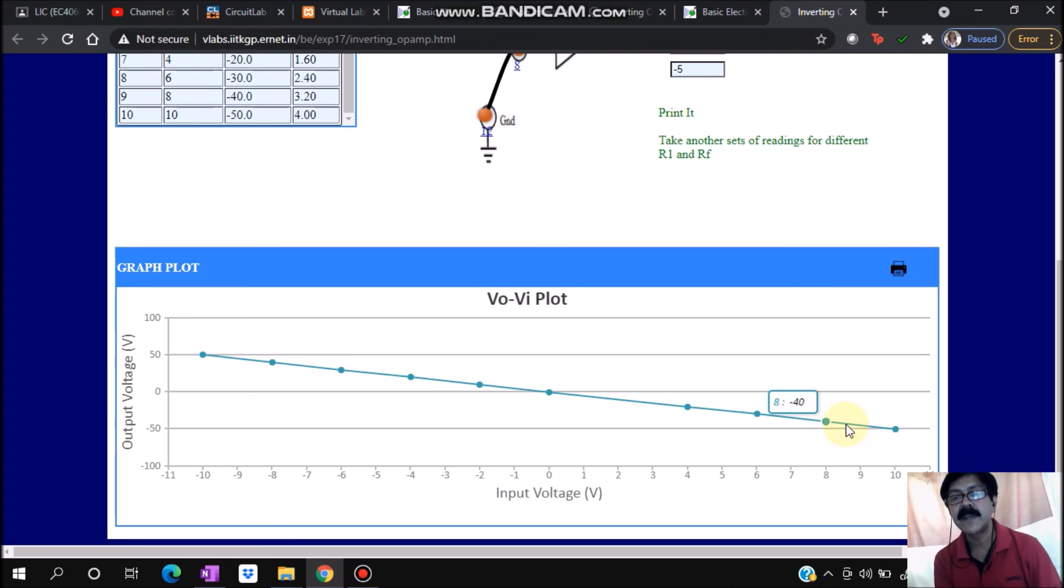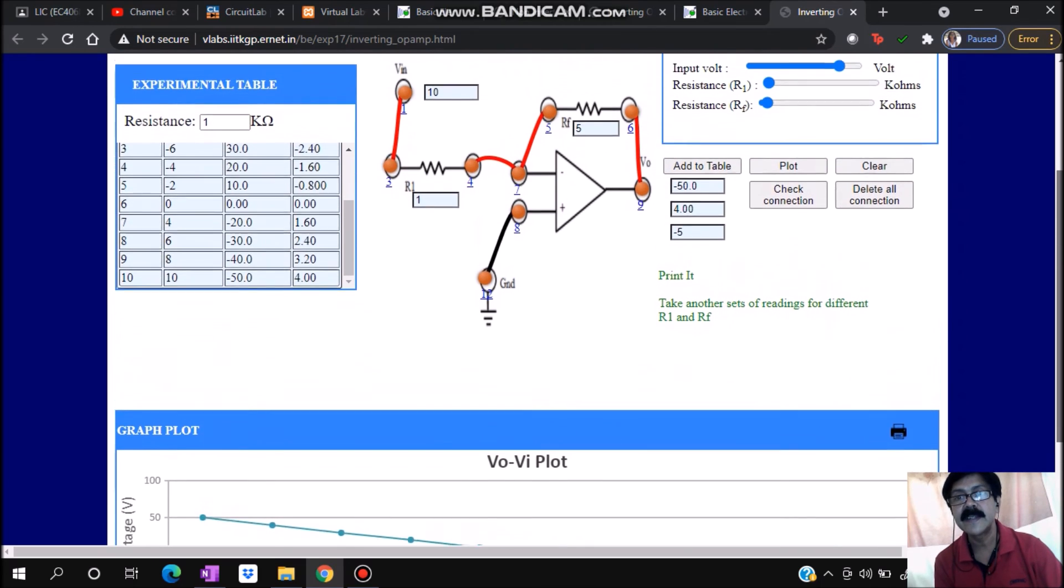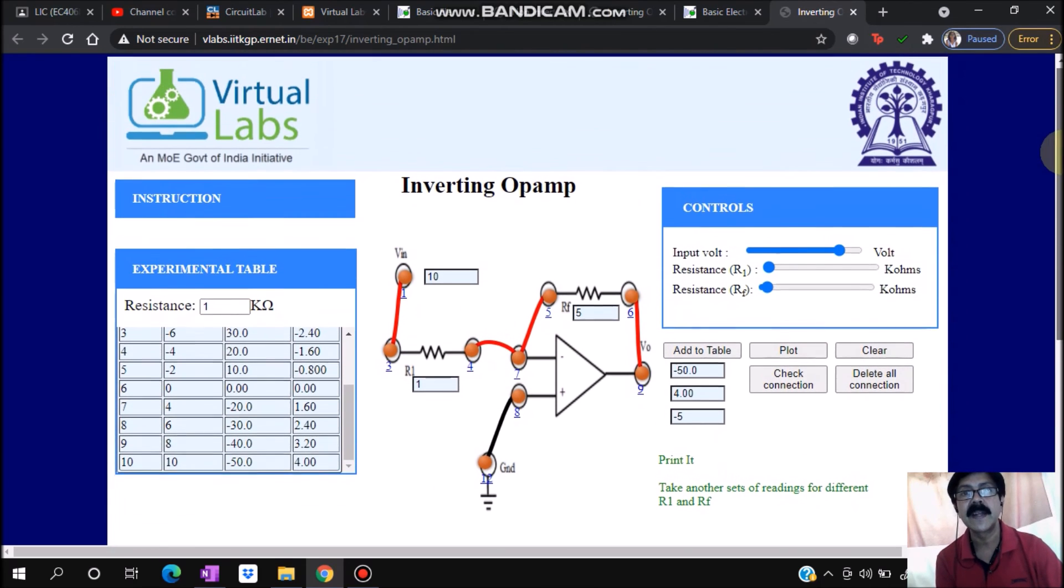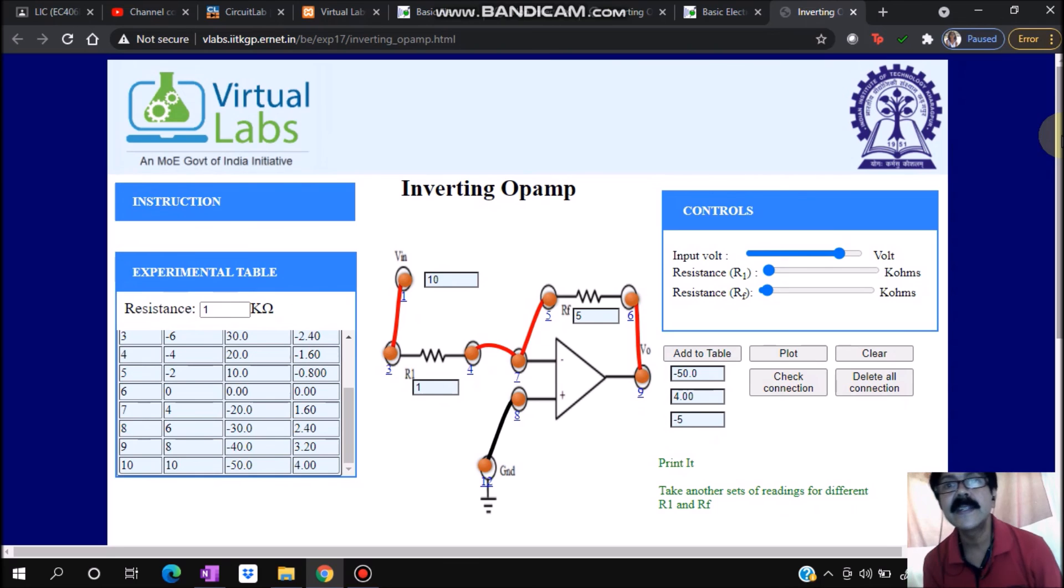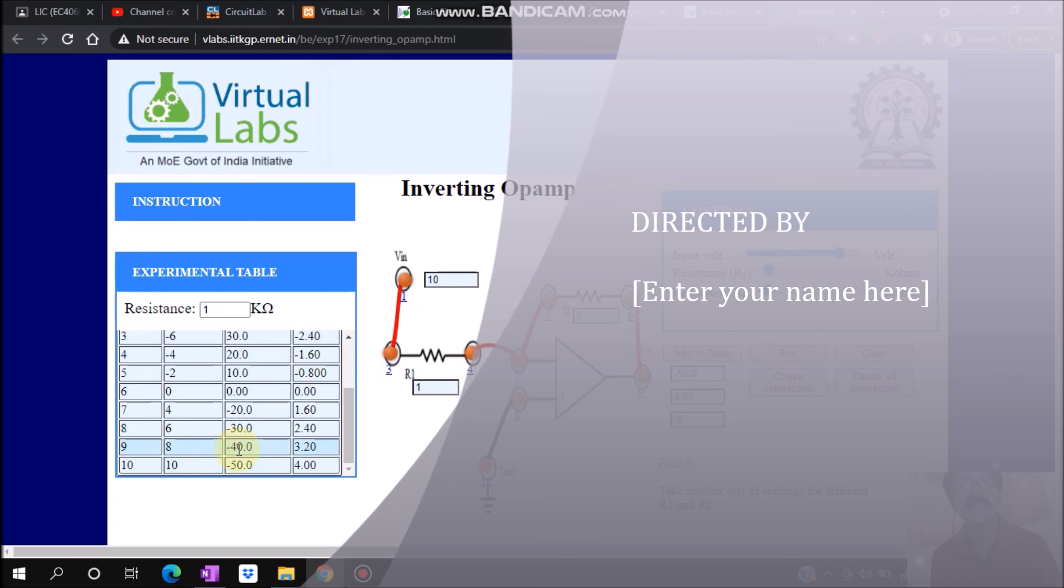So minus Rf upon R1 gives us a negative gain, and that's why it is acting as an inverting amplifier. When I give a negative voltage I'm getting a positive output, and when I give a positive voltage I'm getting a negative output.